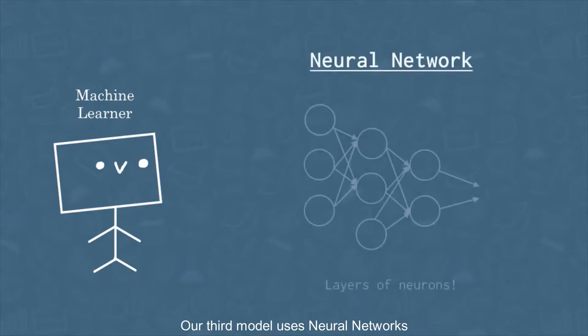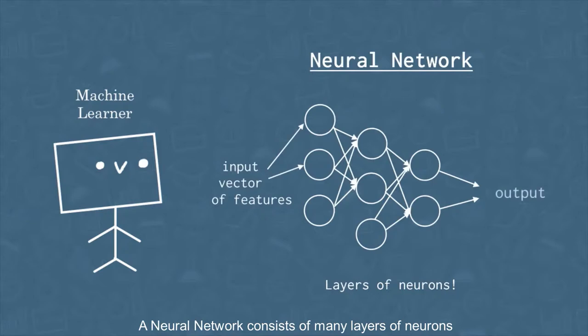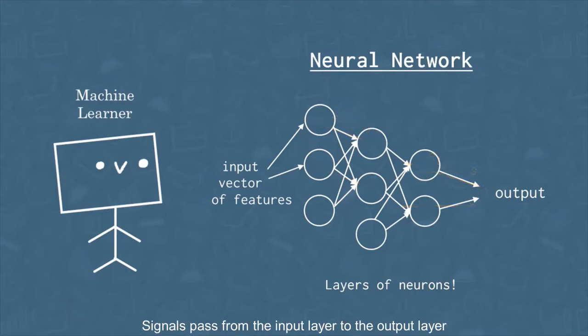Our third model uses neural networks, which are more complicated than our previous two models. A neural network consists of many layers of neurons that take in a vector of input and outputs a binary classification 1 or 0. Signals pass from the input layer to the output layer as the neurons communicate with each other.